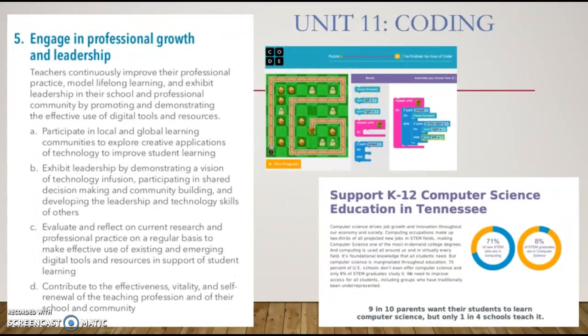Lastly, we have ISTE Standard 5, which says engage in professional growth and leadership. I immediately thought of Unit 11, in which we worked with coding. There were three documents included — I have a sample photo of the Tennessee document pictured here in the bottom right — and each contained statistics concerning computer science. I found out that computer science is one of the most in-demand college degrees, yet only 8% of STEM graduates study it and 75% of U.S. schools don't even offer computer science courses. These documents contained a checklist of things we can do to improve computer science education, and I can address 5A by raising awareness about incorporating computer science into schools.